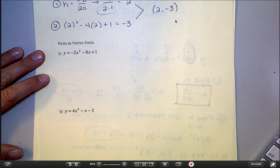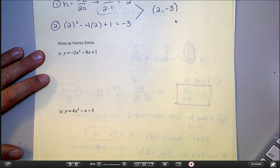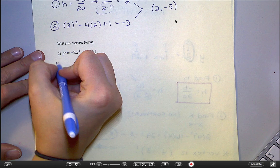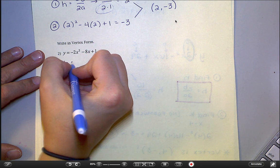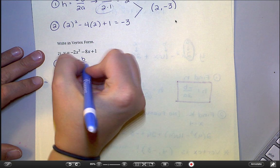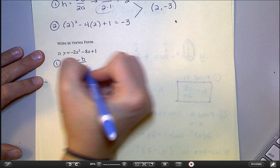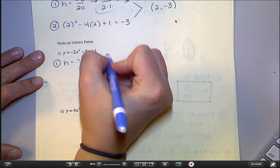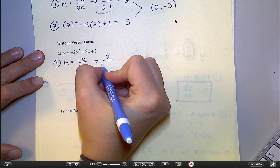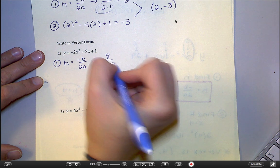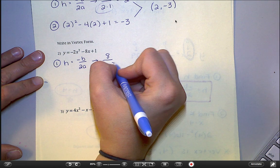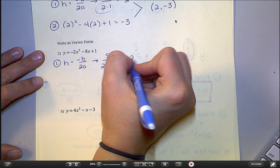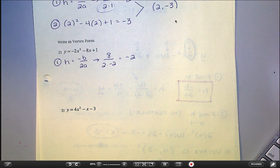So let's just try example 2 and then I think we'll be good for that. So first step, find h. Negative b over 2a. So negative negative 8 would be positive 8. And then over 2 times negative 2. Well, 8 over negative 4 would be negative 2 is the final answer there for h.